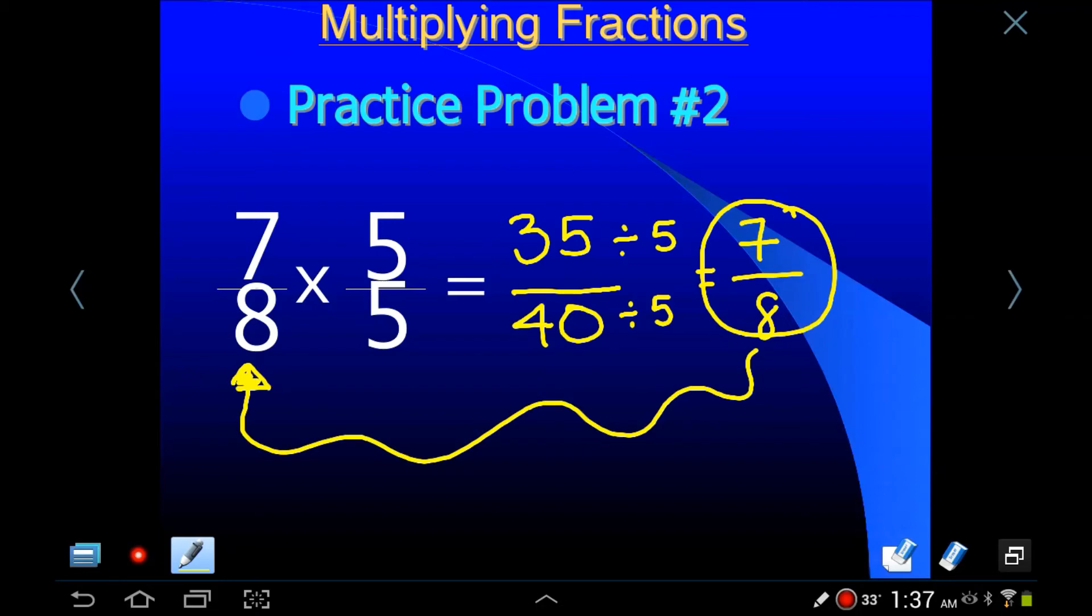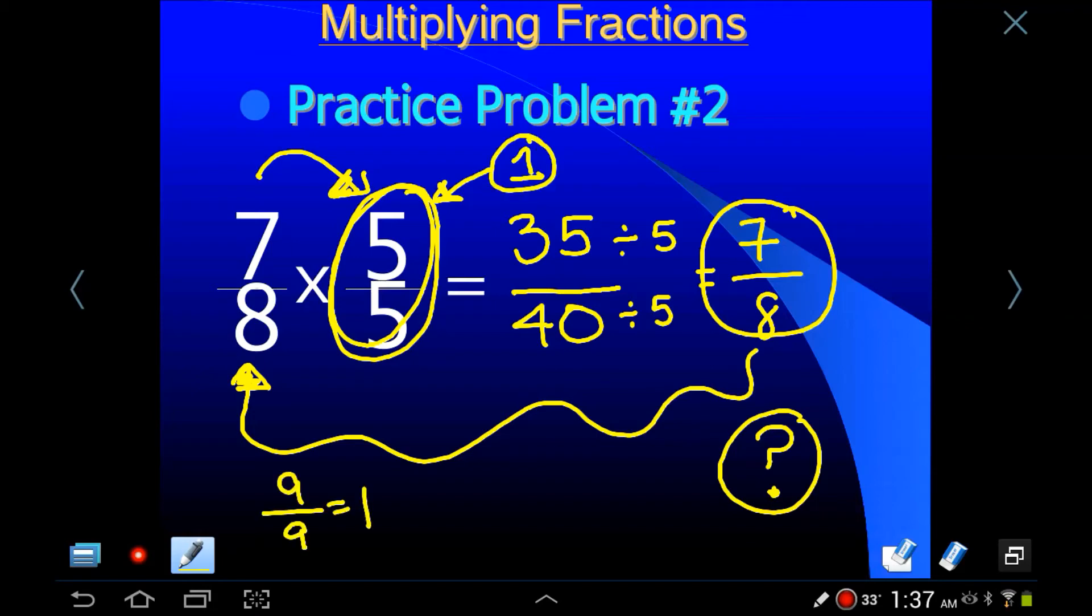Look at this. We ended up with 7/8 again. 7/8 times 5/5 is 7/8. How is that possible? How could that be true? Probably has something to do with this fraction. What is that fraction right there? 5/5. What does that equal? It equals 1, doesn't it? Anything over itself is 1. You know, 9/9 is 1. 17/17 equals 1. So basically what we're doing is 7/8 times 1. What's anything times 1? It's itself. That's called the identity property. You don't need to write that down. That's how that works. 5/5 is 1.